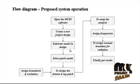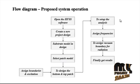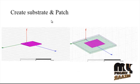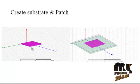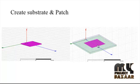The substrate model is loaded and then we select the patch model. Here we are using a rectangular patch antenna with dimensions defined by X and Y parameters as given in the paper. The substrate acts as a sandwich layer between the top antenna and the bottom ground plane. The FR4 substrate has a dielectric constant of 4.4, and the rectangular patch antenna is placed on top of the substrate.